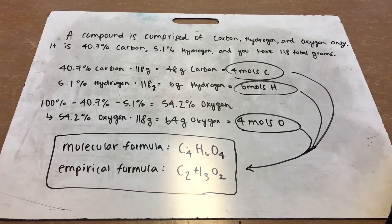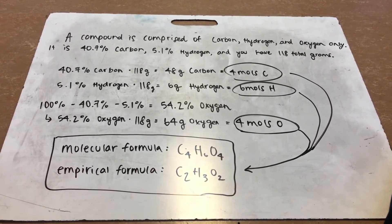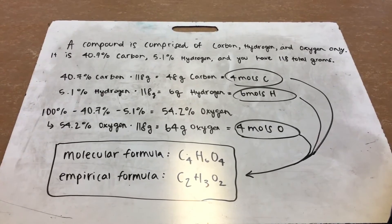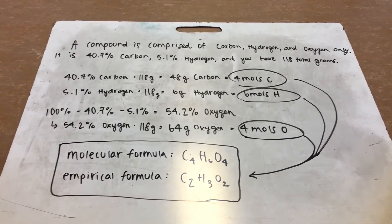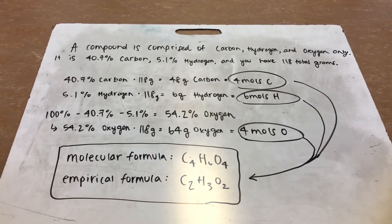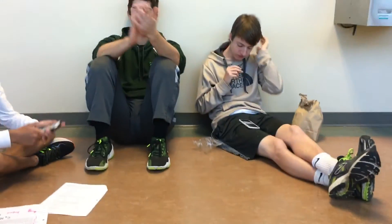And then to get the empirical formula, you divide that by 2 because you want to get the least common denominator, or least common factor, which would make the empirical formula C2H3O2. Yay! Thank you.